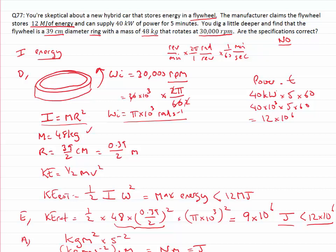The units of that, of course, are watt is a joule per second, multiplied by seconds gives me my joules. So the claim the manufacturer makes for saying that if I supply 40 kilowatts for five minutes, I get 12 megajoules, that's perfectly fine. The problem is that the flywheel can't store 12 megajoules of energy.